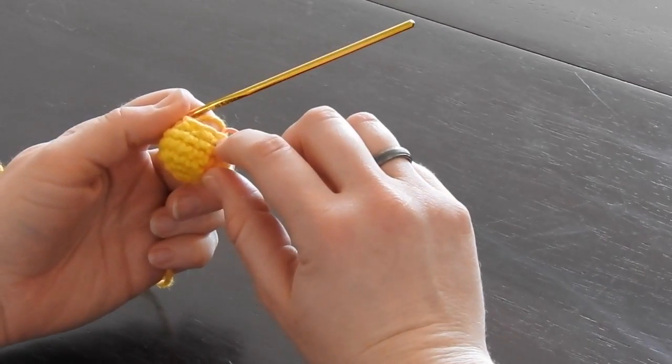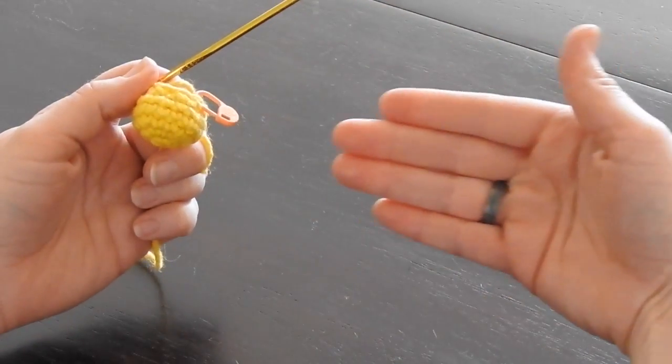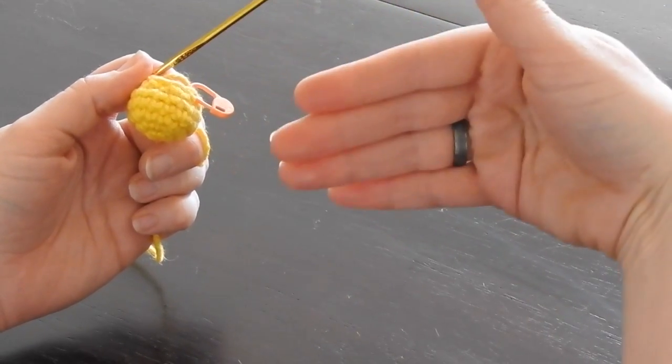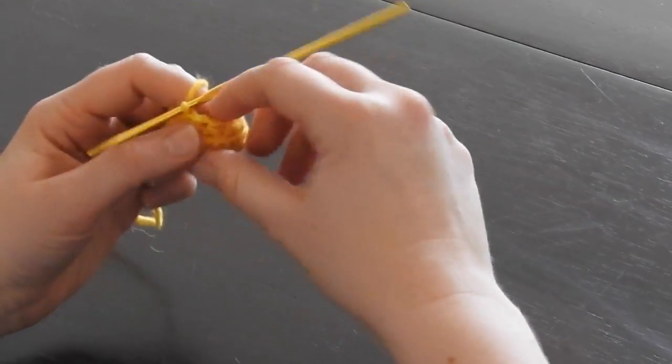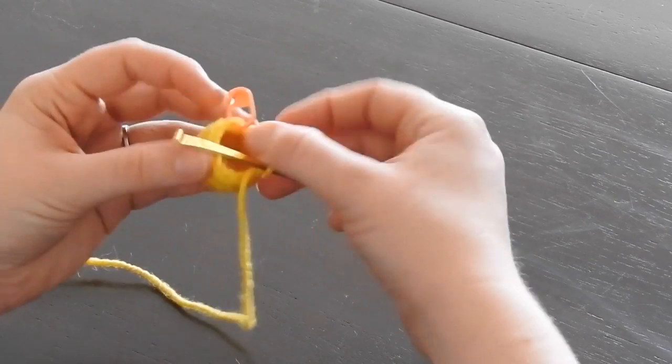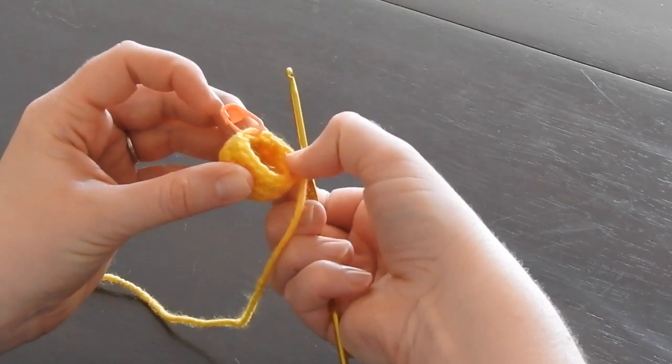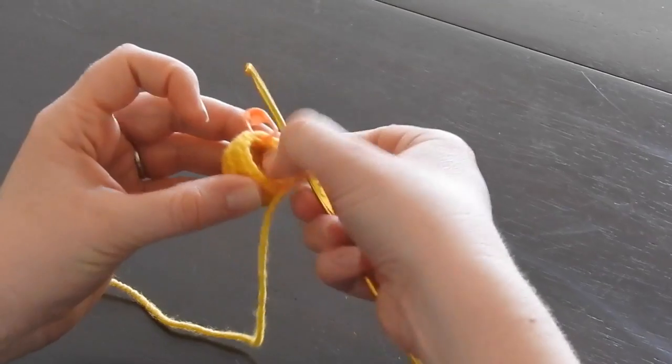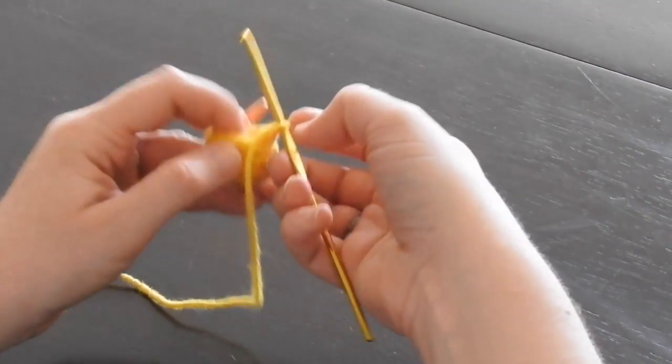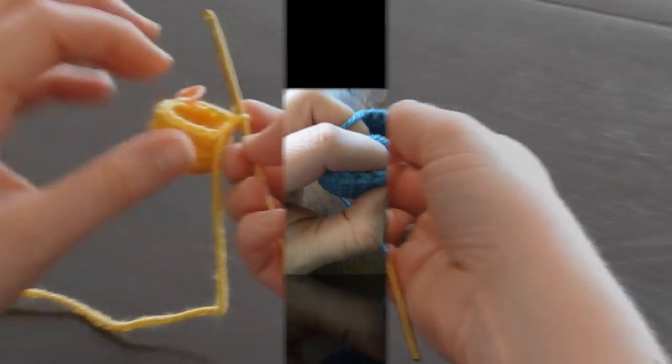The only time I use the regular decrease now is if I'm making a flat piece where you could see the front and the back of the piece and you don't want to show off those loops that you've left behind. Those are being kept on the inside where nobody would ever see that because you're going to stuff it inside.